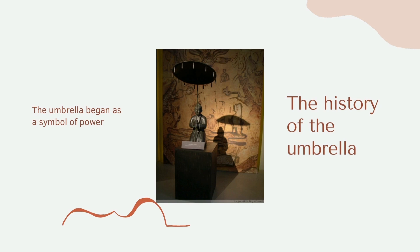In ancient times, the umbrella was a symbol of the power of the emperor, the generals, and the dignitaries, and was used to cover the sedan chairs or cars in which the emperor or high officials went on their tours. The material, color, and size of the umbrellas were also a sign of the rank and status of the officials.